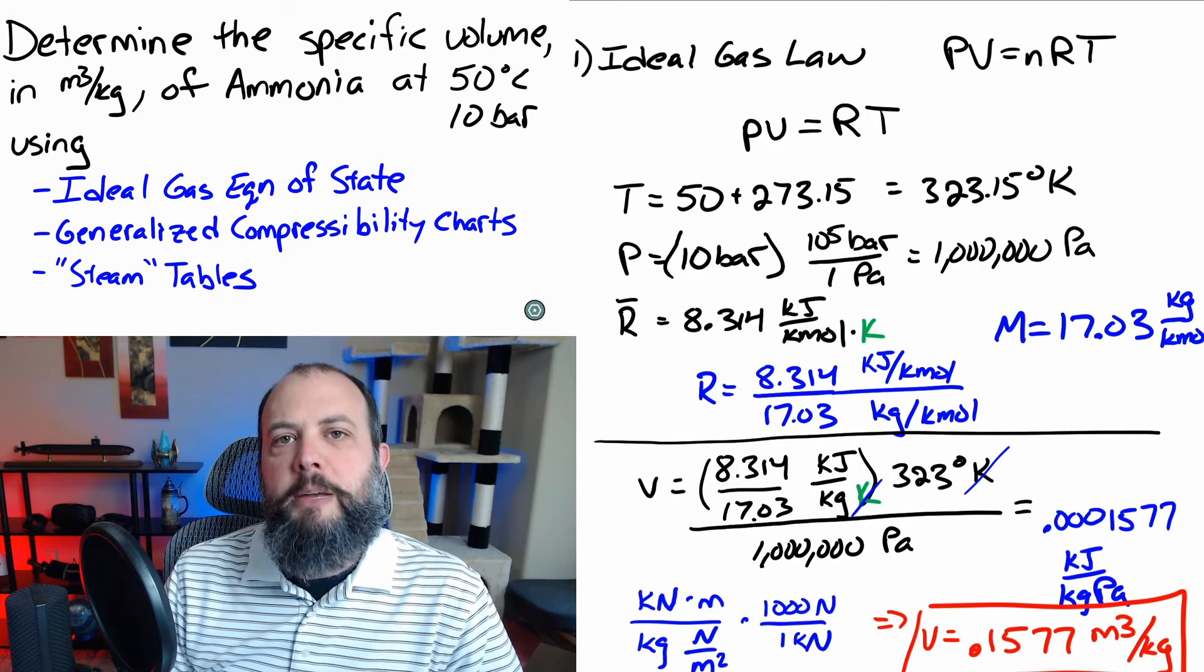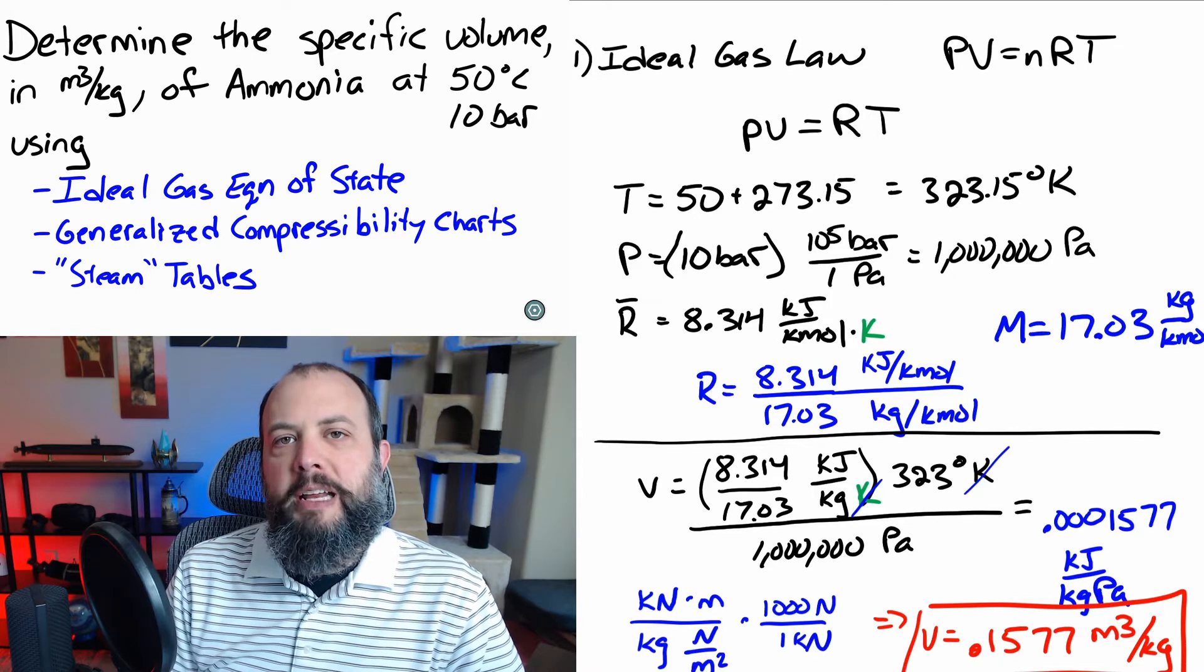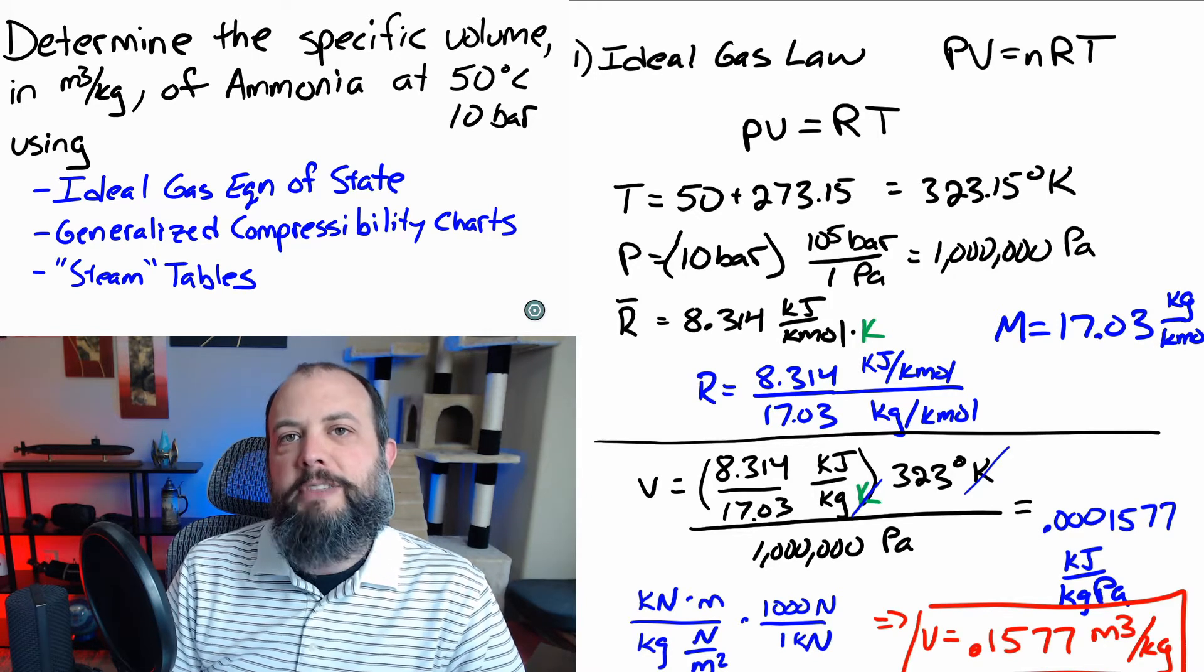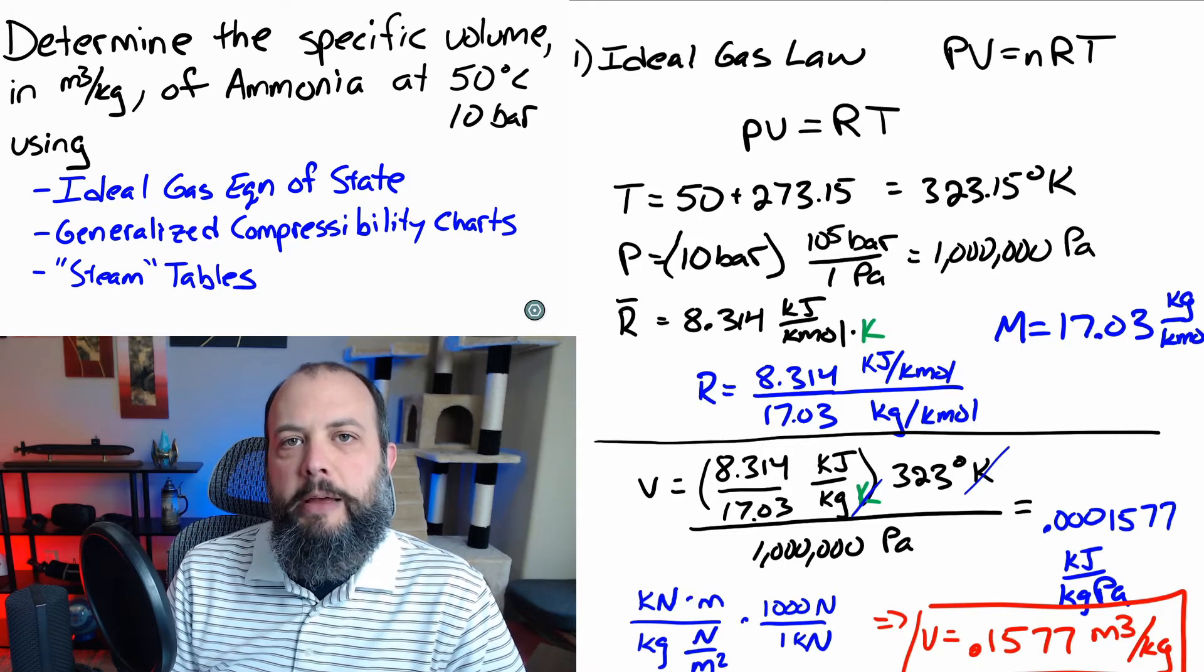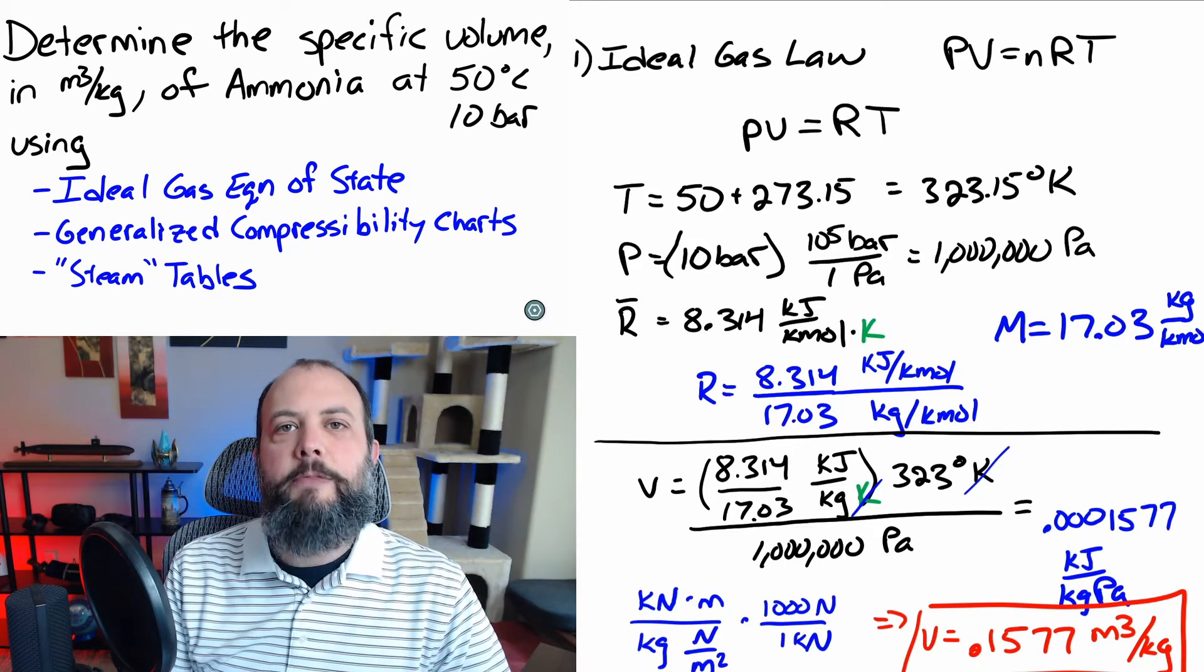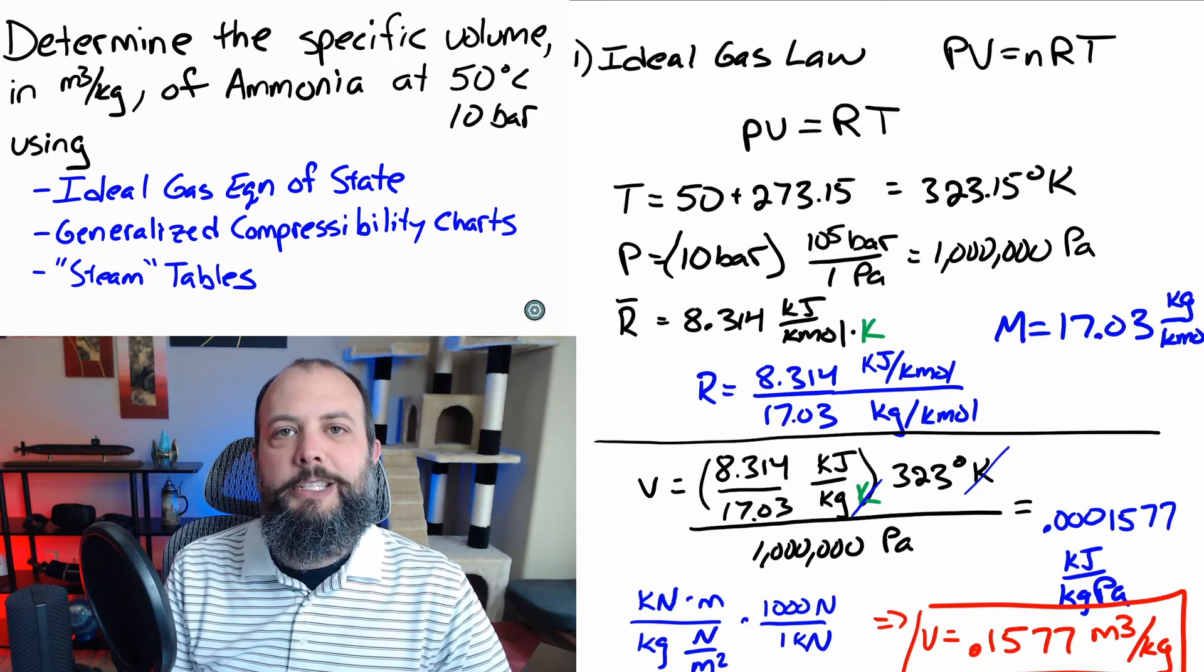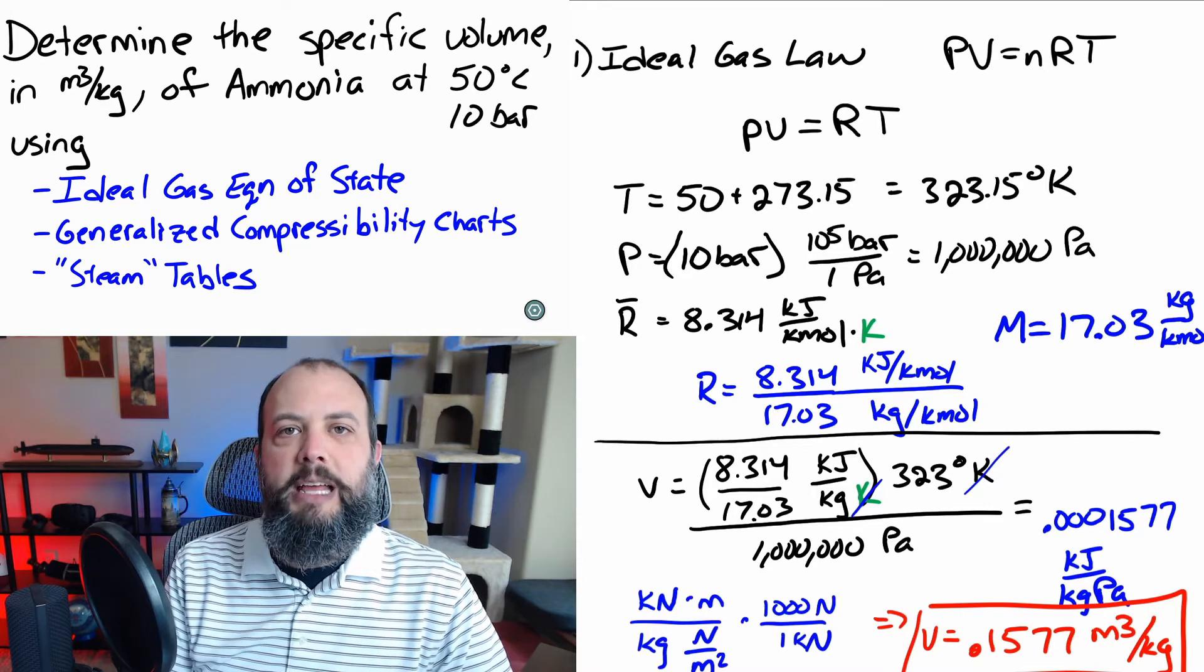So, with the final step of multiplying by 1,000 in order to cancel out the kilonewtons, we're left with 0.1577 meters cubed per kilogram. And again, I can't overemphasize how important it is to be meticulous with your units when using the ideal gas law.